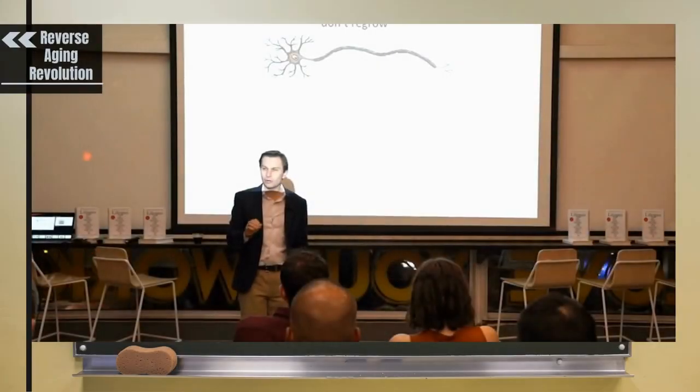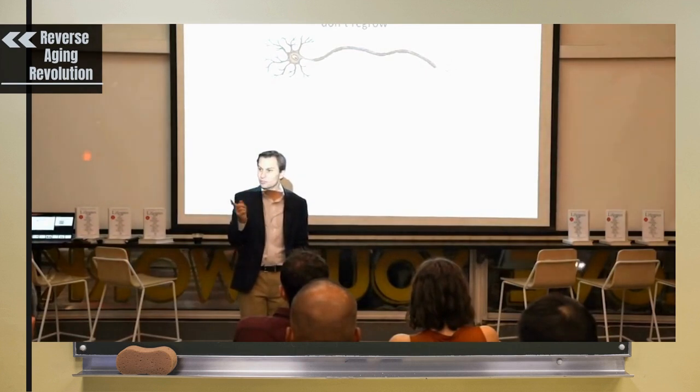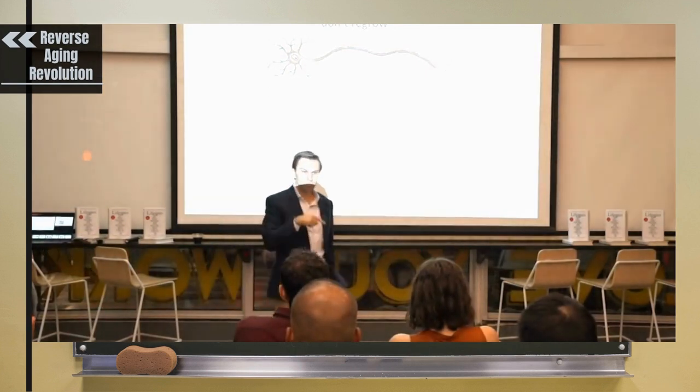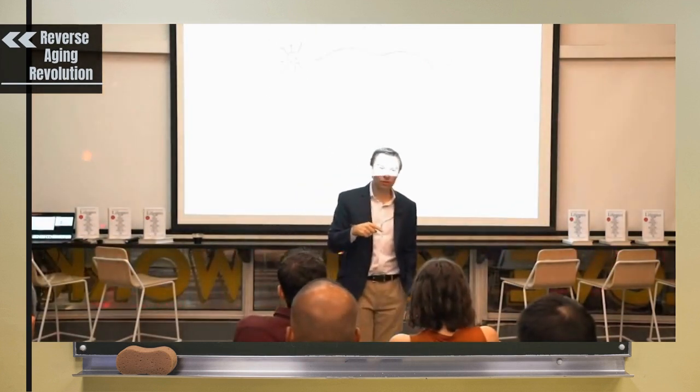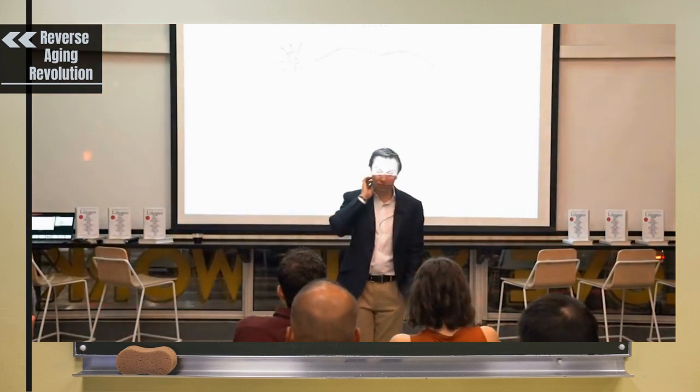I wanted to tell you about why we chose the nervous system to regenerate, to reverse aging in. Because we could have chosen the skin, could have chosen the liver to reverse aging.